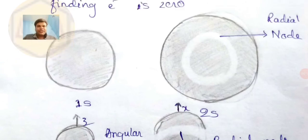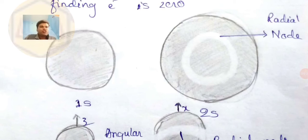For 3s, the number of radial nodes = n - l - 1 = 3 - 0 - 1 = 2, so two radial nodes. For 4s it will be 3 radial nodes. The pattern continues as the principal quantum number increases.